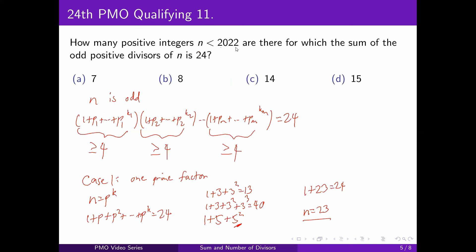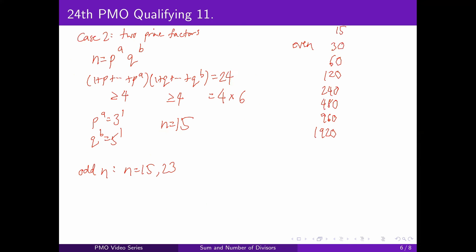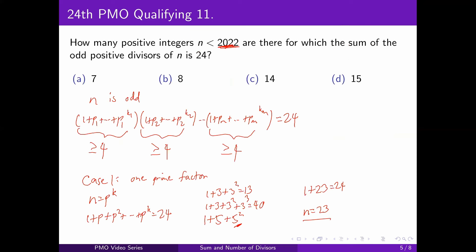Remember we only go until 2022, so we stop at 1920 for the multiples of 15. For 23, we do the same thing — multiply by 2 repeatedly until we reach the limit. Then we count: there are a total of 15 numbers in those two lists, which tells us the answer for this problem is letter D, 15.